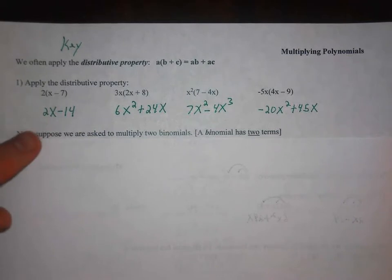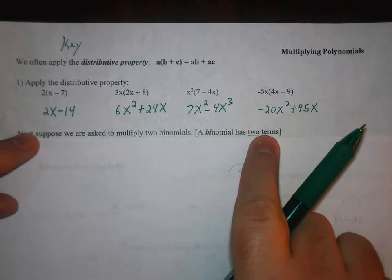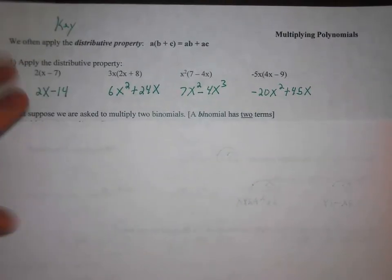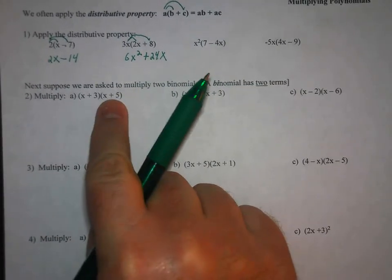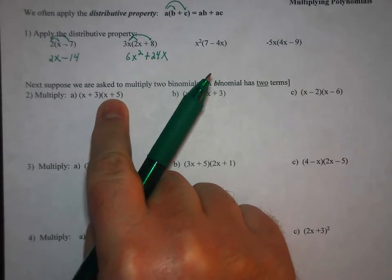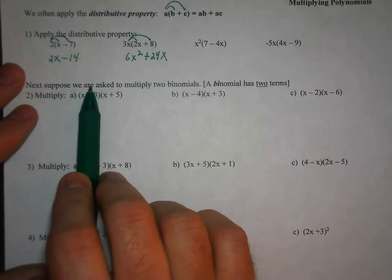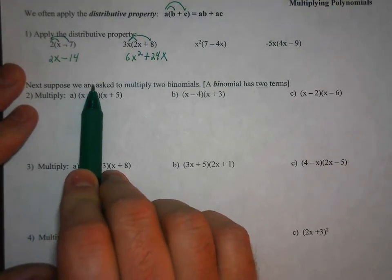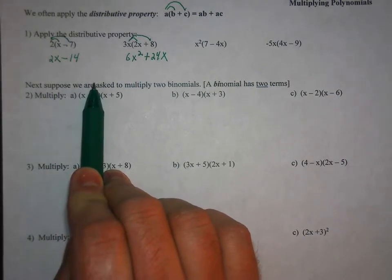Okay, next thing we look at is multiplying two binomials. And a binomial has two terms in it. So if we have x plus 3 times x plus 5, the way that I look at it is if you take just that first term of x, distribute it to the x plus 5, and that gives you x squared plus 5x.